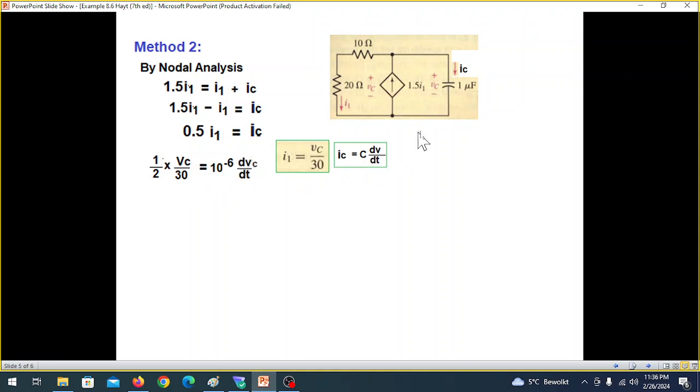So 0.5 becomes half. I1 becomes VC over 30. So VC over 30. And IC is C dV/dt. C is 1 microfarad. That means 10 to the power minus 6 dVC/dt.